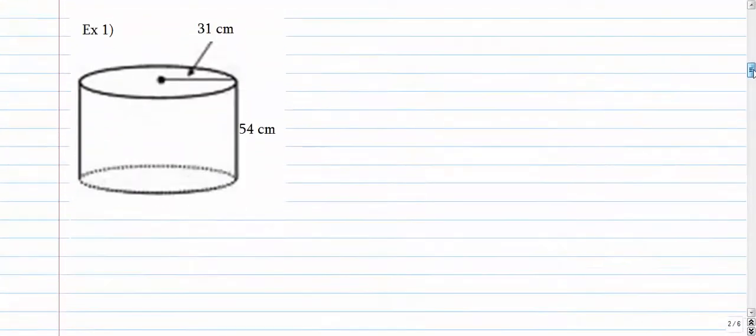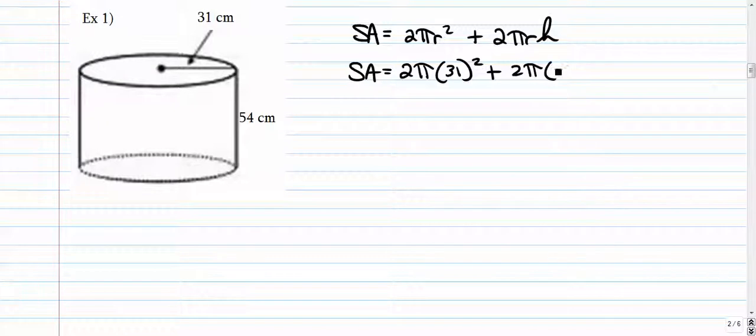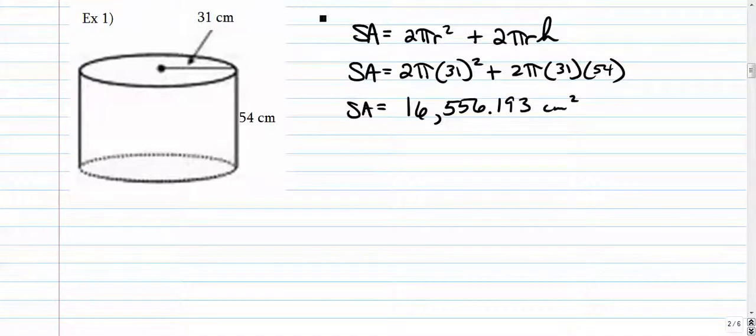Some of these are going to be somewhat tricky. Number one. Write your formula, 2 pi r squared plus 2 pi r h. Radius in this case is 31, height is 54. So you type that all into your calculator, and you get a really big number. This is an area, so that number is going to be squared, centimeters squared. Comes out to be 16,556.193 centimeters squared.